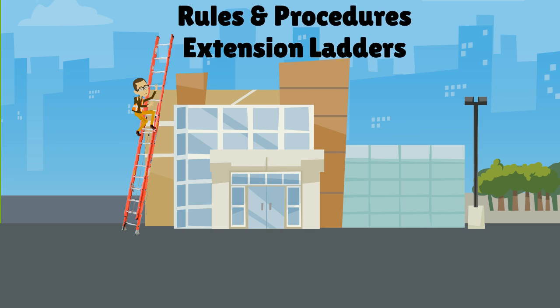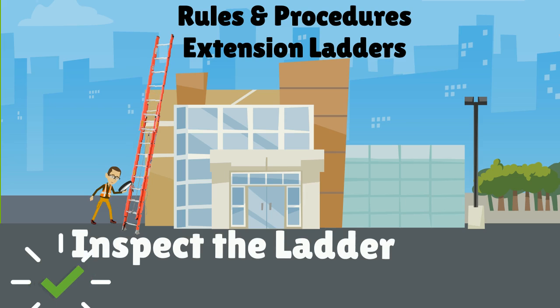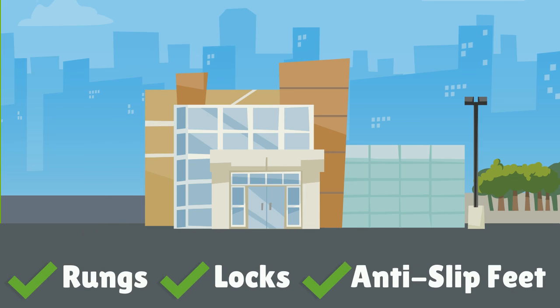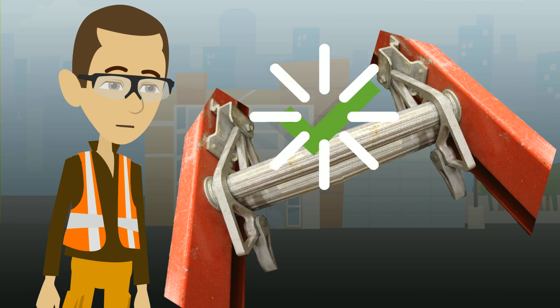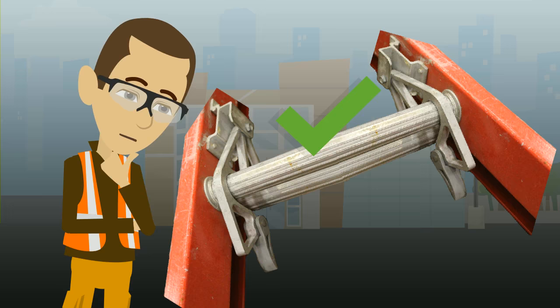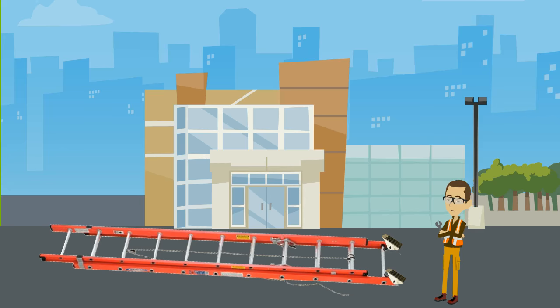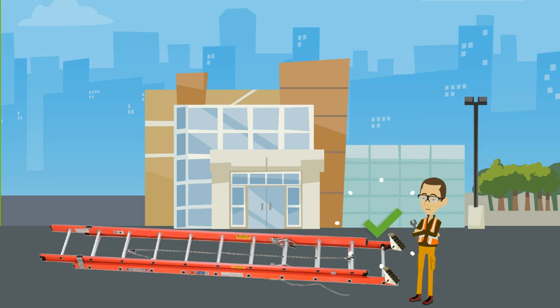Let's look at the rules and procedures that should be followed when using extension ladders. Before each use, inspect the ladder. Ask yourself these questions as you inspect the ladder: Are the rungs in good condition? Do the ladder locks function correctly? Does the ladder have anti-slip feet? And if so, are they in good condition?